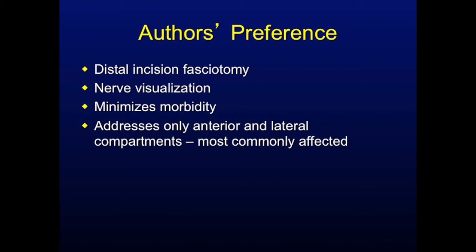We currently prefer to use the distal incision approach for our primary anterior and lateral fasciotomies in young athletes, reserving the two incision or open approach in revision cases involving posterior compartments. This approach allows for direct visualization and protection of the superficial peroneal nerve, but can be performed through a relatively small incision.